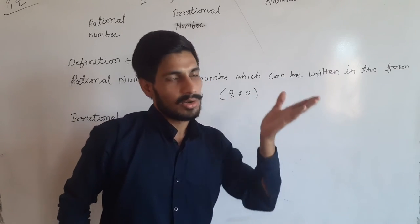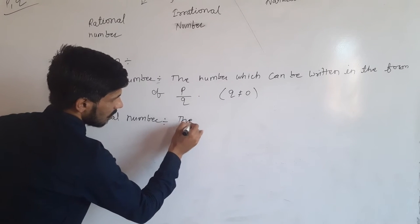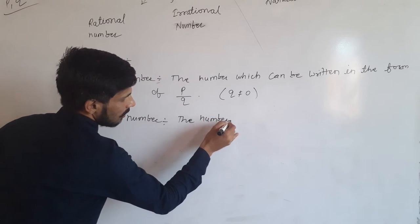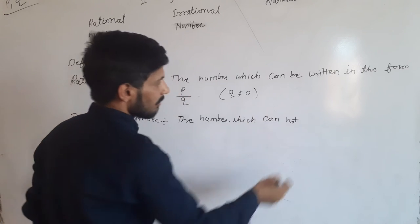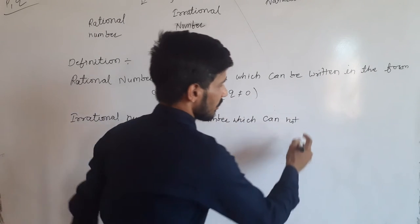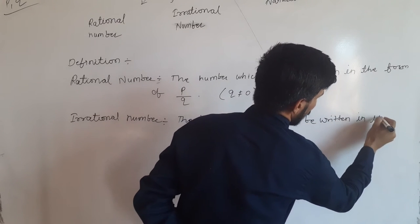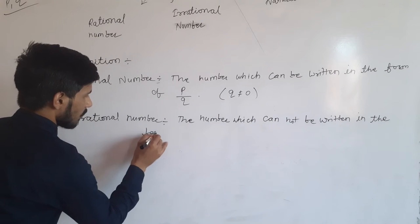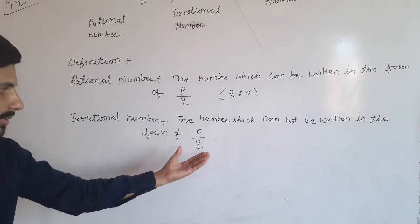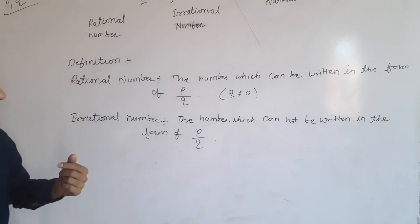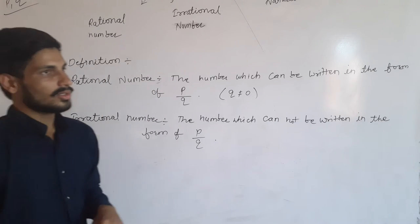Now, numbers which cannot be written in the form of P upon Q — that is called an irrational number. So numbers that can be written in the form of P upon Q are rational numbers, and those that cannot be written in the form of P upon Q are called irrational numbers.